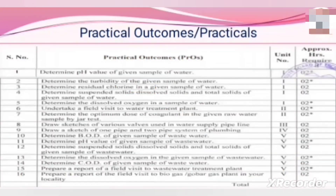Practical outcomes are the practicals that students have to perform during the course study. There are total 16 practical outcomes as shown in the table, out of which we have to complete a total of 12 practicals. The respective unit number for each practical outcome is also represented in the table. Each student will be given apparatus or instruments, along with procedure, formula, calculation, and other necessary details to perform the practicals.